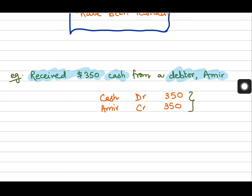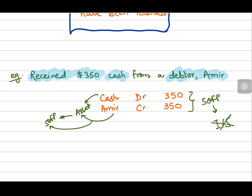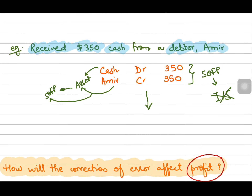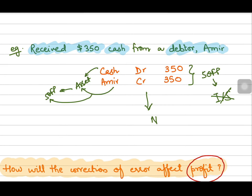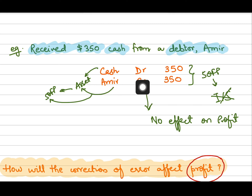In our last example, we forgot to record the cash received from the debtor. Cash is an asset shown in the statement of financial position, and the debtor is also an asset shown in the statement of financial position. Both accounts have nothing to do with the income statement. So by making this correcting entry, there will be no effect on profit. It will affect cash and the debtor's account, but profit will not be affected.